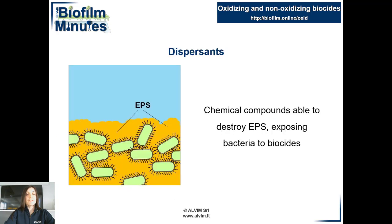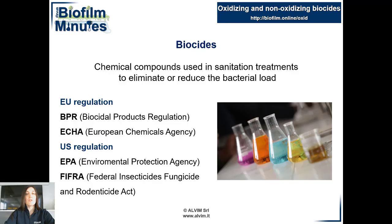Biodispersants are chemical compounds that react selectively with EPS. They expose bacteria to the external environment, thus increasing the effectiveness of biocides. They are completely biodegradable and do not lead to the formation of toxic byproducts.